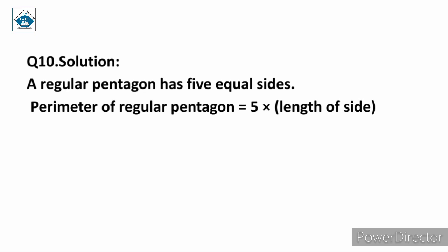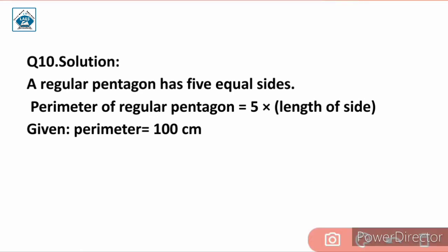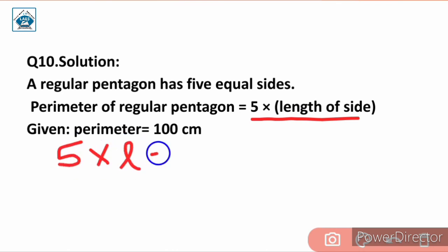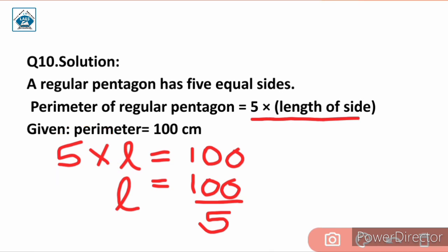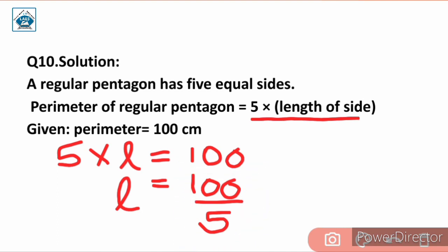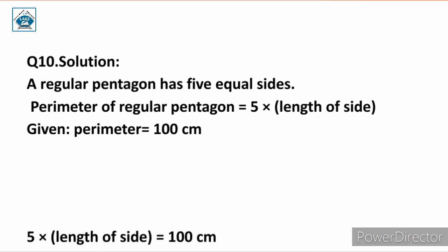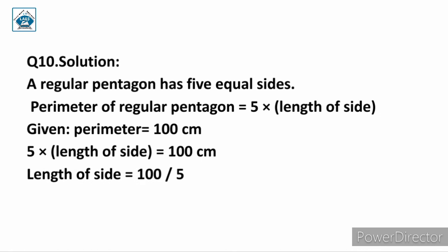The perimeter is 100 centimeter, so 5 into length of side equals 100. We divide 100 by 5, which equals 20 centimeter. Therefore, the length of each side of the regular pentagon is 20 centimeter.